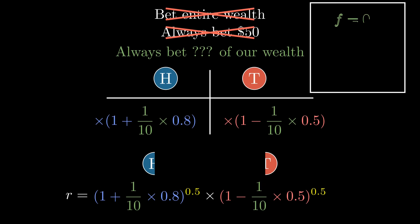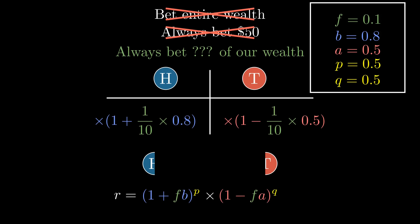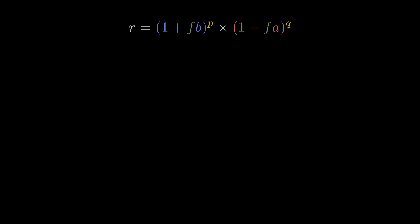Let's say f is the fraction of wealth we're betting, b is the gain, a is the loss, and p and q are the probabilities of heads and tails. Now let's substitute those variables in. And let's graph it!